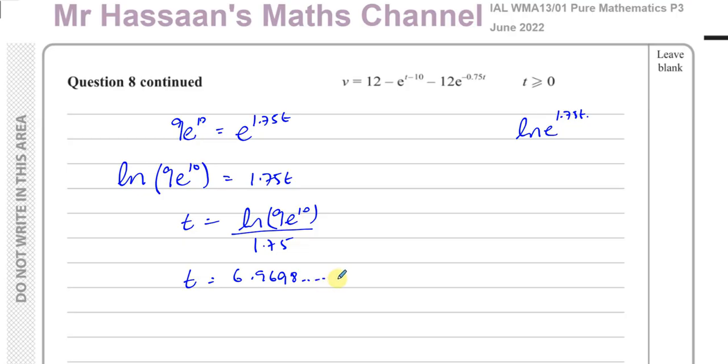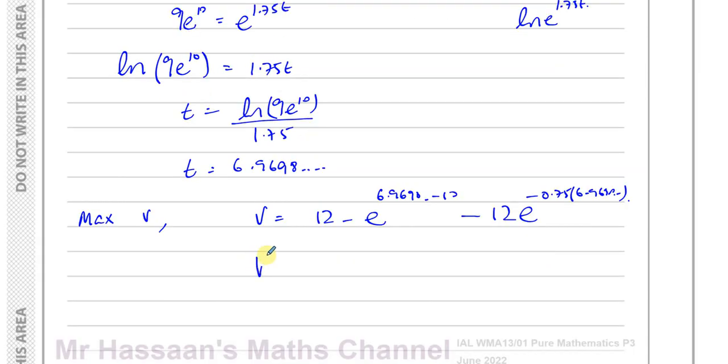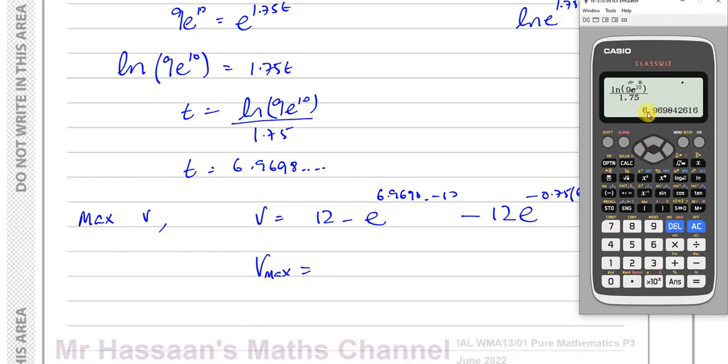So that's the time at which the velocity is its maximum. But the question says, find the maximum velocity. So therefore, we can say the maximum velocity is going to be given by v equals 12 minus e to the power of 6.9698 minus 10 minus 12e to the power of negative 0.75 times 6.9698, and that will give me the maximum velocity that he reaches during this race. So what I can do is, this is the answer, that's the last answer, so I can set this up quite nicely.